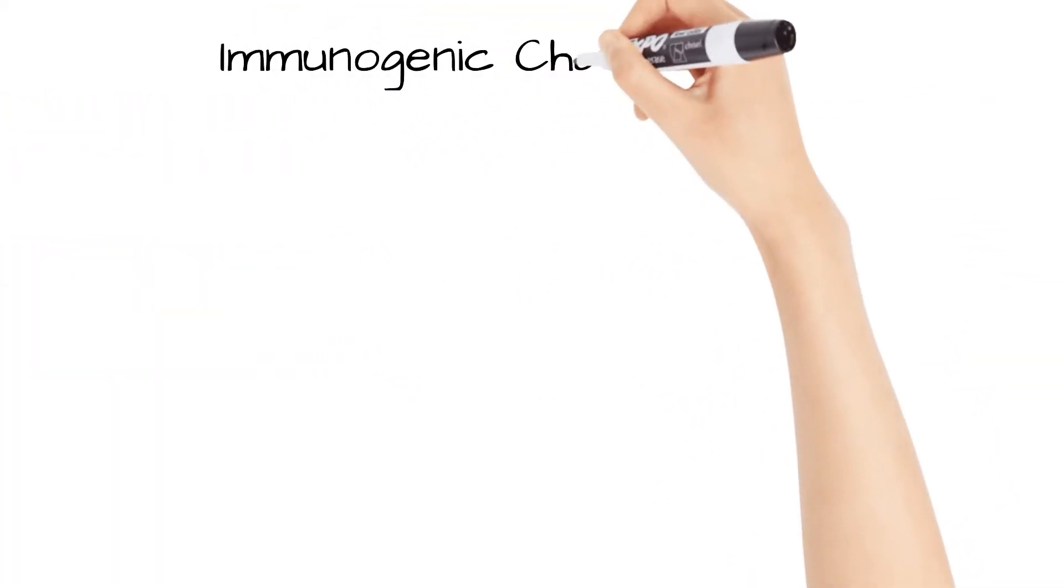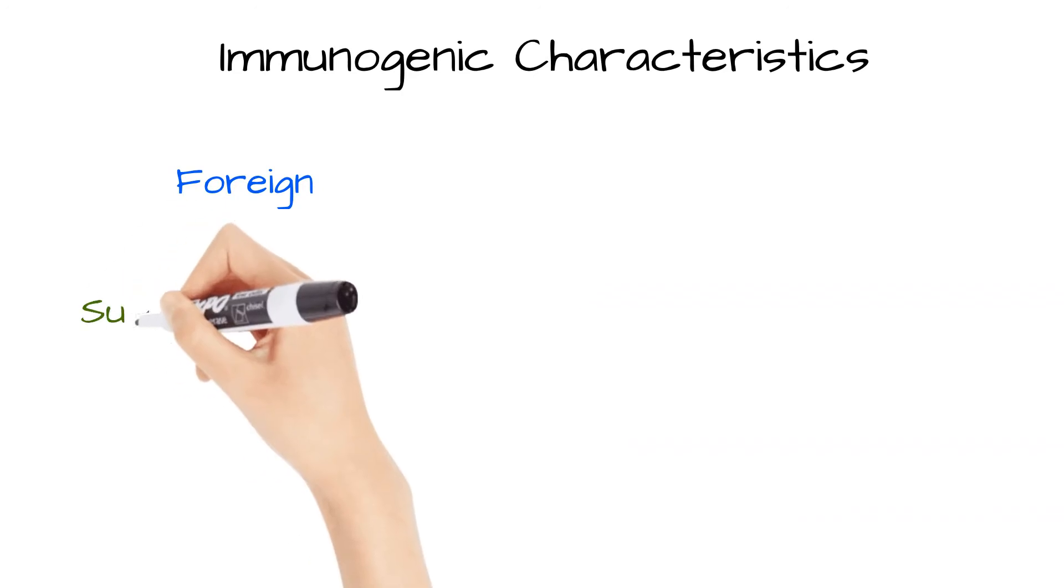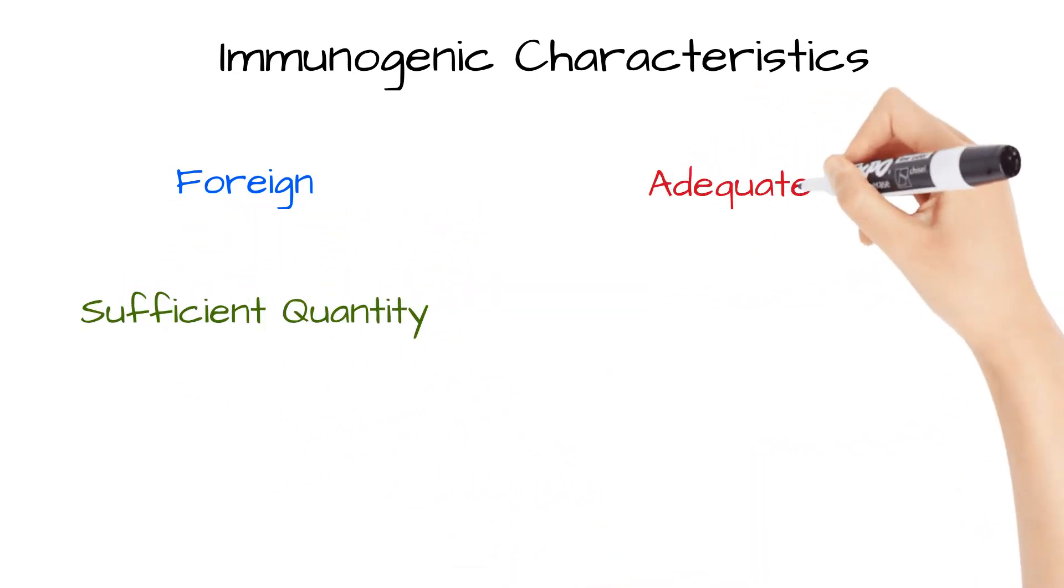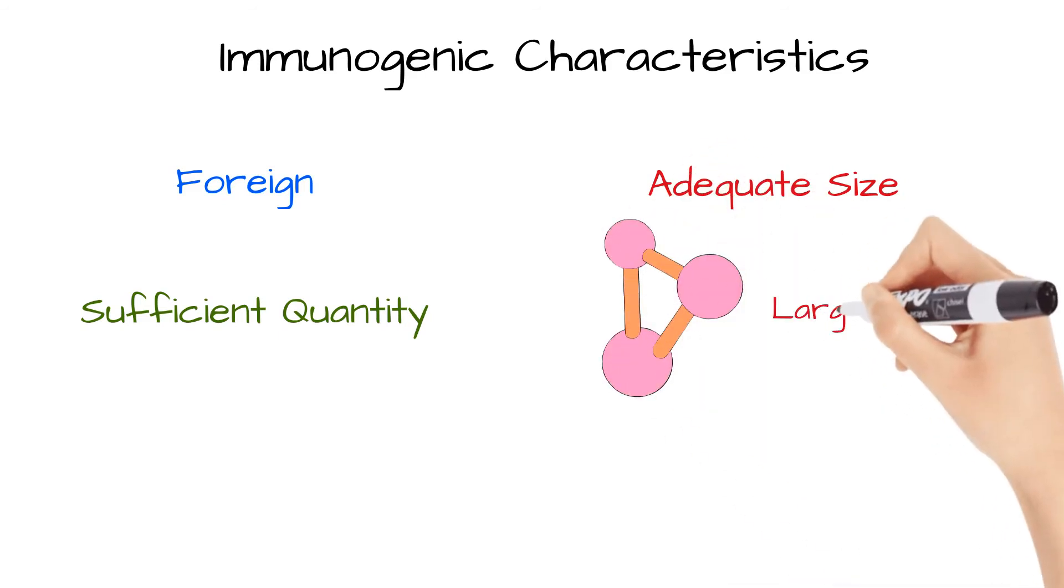Certain criteria impact how much an antigen is immunogenic. These criteria include foreignness to the host, being present in sufficient quantity, and adequate size. As far as size, large molecules are commonly the most immunogenic.